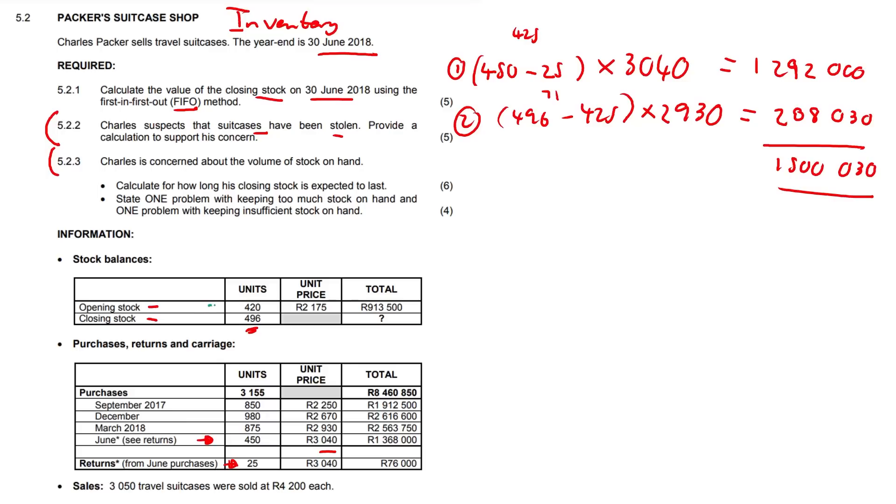We factor in the 420, we're going to factor in the 3155 minus the returns amount, minus the 3050 that were sold, and minus the 496 closing stock. So it's going to be our opening stock plus our purchases minus our returns minus our sales minus our closing stock. That's going to be 420 plus the 3155 minus the 25, minus 3050 minus the 496, and we get four units.